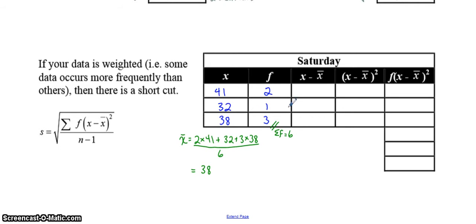So remember how to find the mean when you have frequencies. Frequency multiplied by the data. Do that for each of them. Add it up. Divide by the sum of the frequencies.